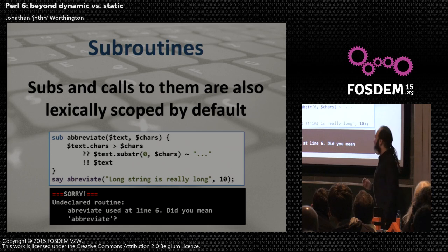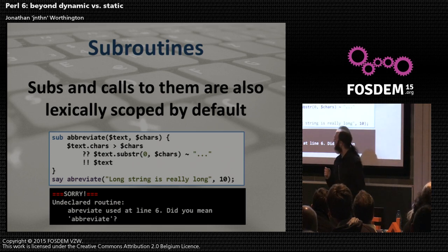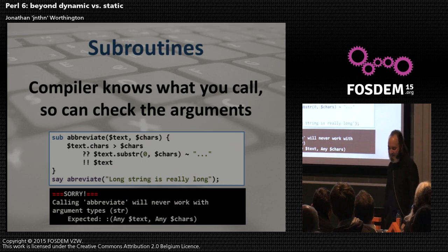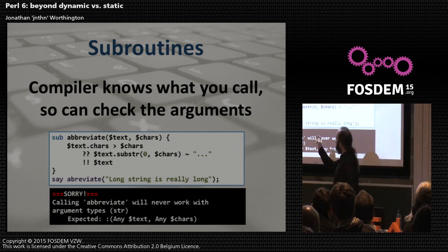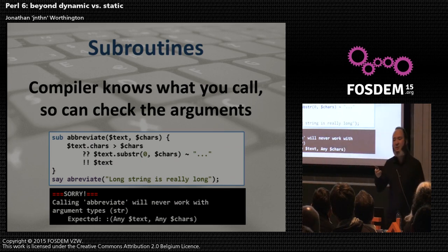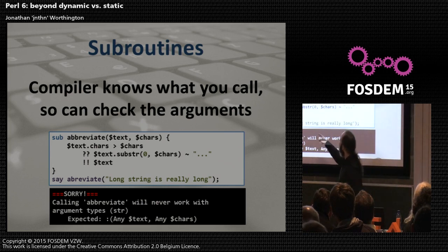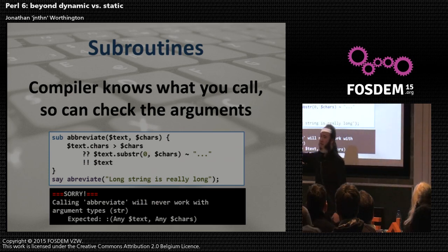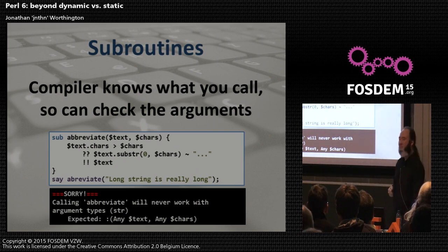There are more things that could go wrong. If I'm having a really bad day, I'll forget one of the arguments. Because we can resolve at compile time what you're calling, we can look at the call and say, 'Wait — you're passing a single argument there, but this sub has a signature saying it wants two.' We can tell you about that at compile time in this case, because we can.